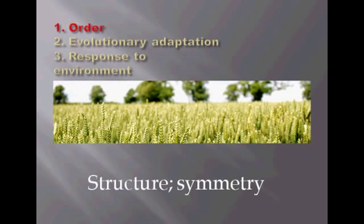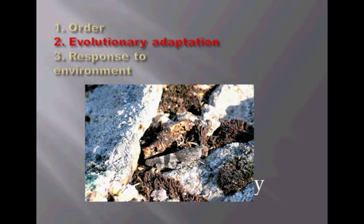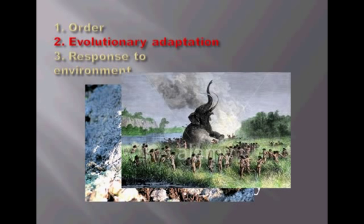Flowers and animals show examples of order, like symmetry. Evolution, adaptation — survival of the fittest doesn't mean the biggest or the strongest; it means having to adapt to the environment. If the environment calls for a small animal to survive because they have to hide, then those who are big are most likely going to be eaten or killed. So being the biggest doesn't necessarily mean survival of the fittest.